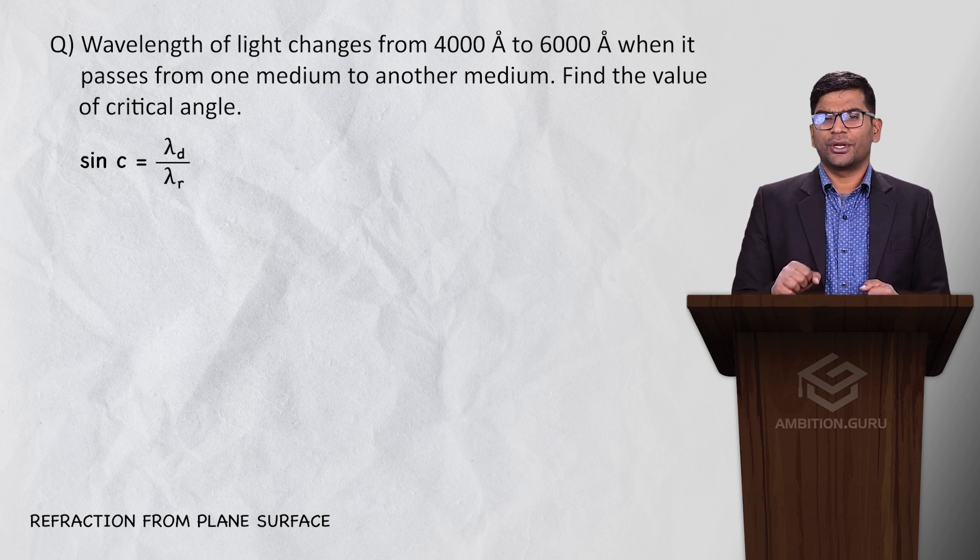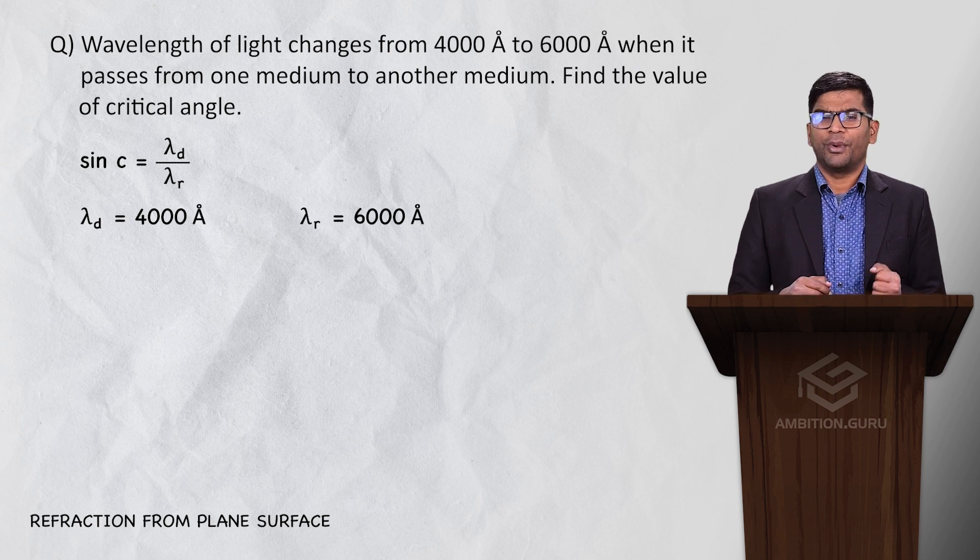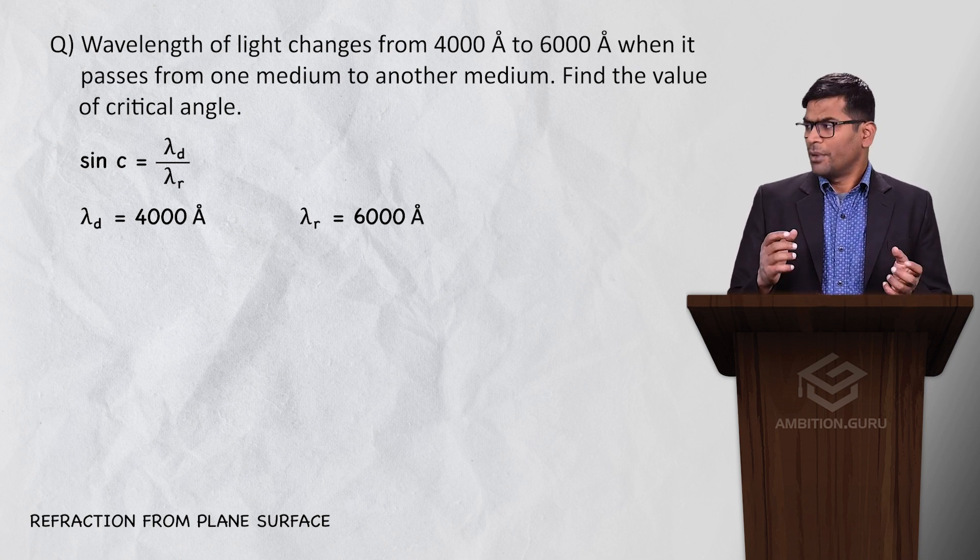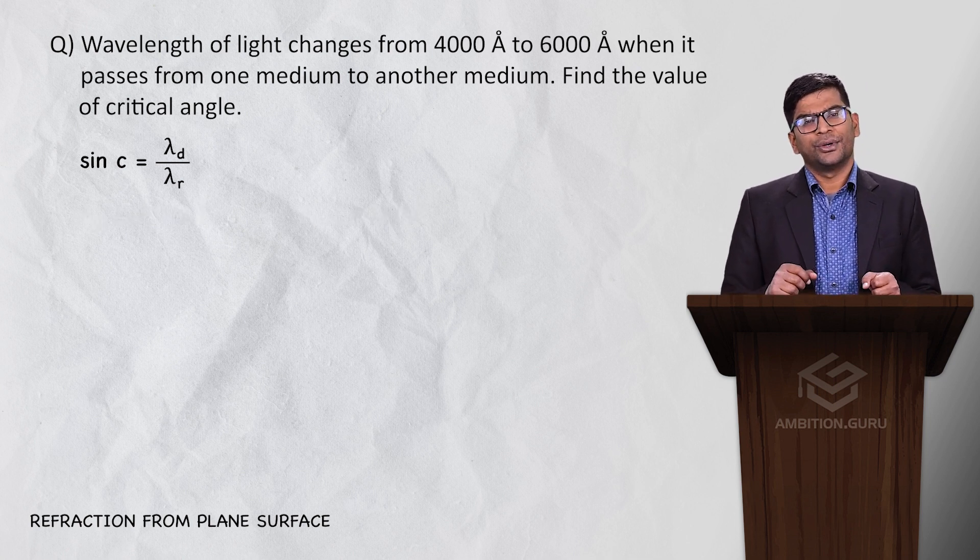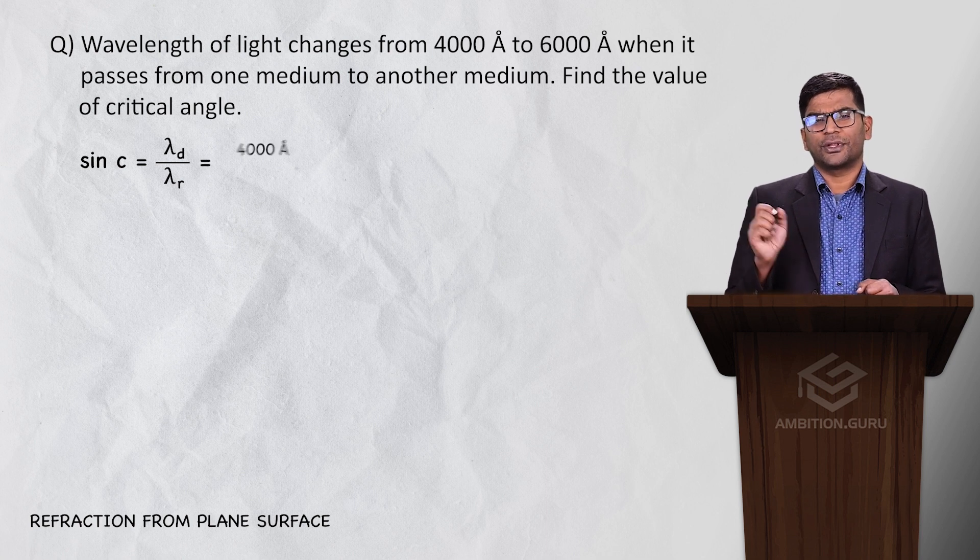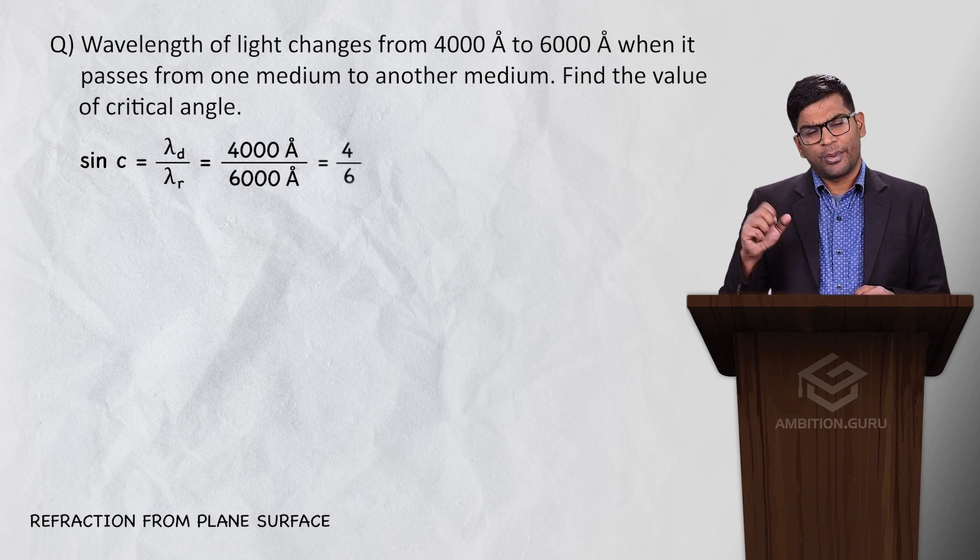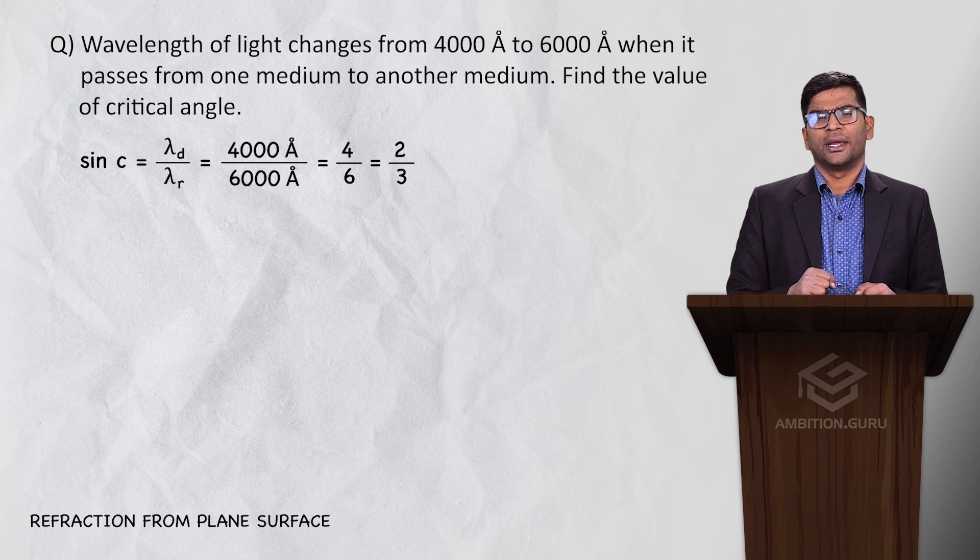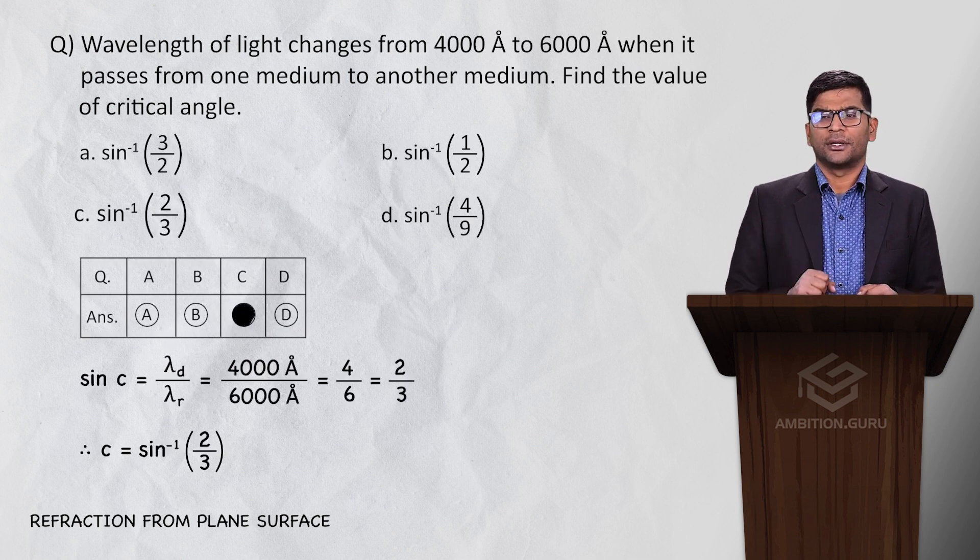Now in denser medium wavelength is less, in rarer medium wavelength is more. So 4000 angstrom is definitely in denser, 6000 angstrom is confirmed in rarer. Knowing this, we can write: sin c equals wavelength in denser upon wavelength in rarer, which equals 4000 angstrom upon 6000 angstrom, which is 4 by 6 or 2 by 3. Answer is sin inverse 2 by 3.